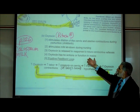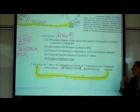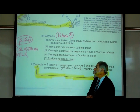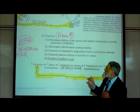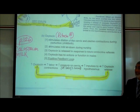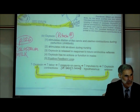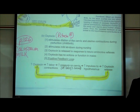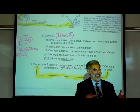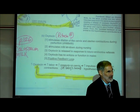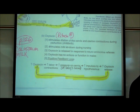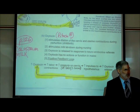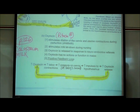Oxytocin is released in response to what's known as a neuroendocrine reflex, which we'll explain. Oxytocin has no actions or functions in males, because the oxytocin receptor sites are on the uterus and on the mammary glands — and males don't have those. So even if you injected males with oxytocin, it would have no place to activate anything.